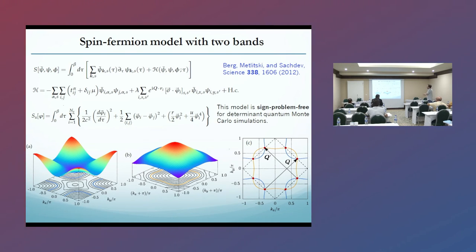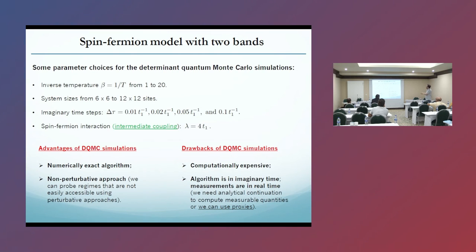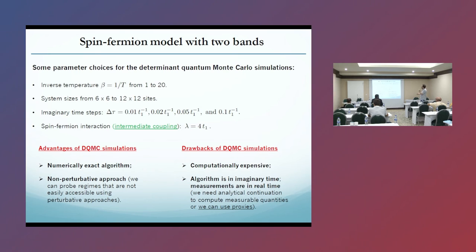We use some band structures shown here, and also some parameter choices: for the inverse temperature we go from 1 to 20, system size from 6 to 12, imaginary-time steps from 0.01 to 0.1, and we choose an intermediate coupling lambda equals 4T.